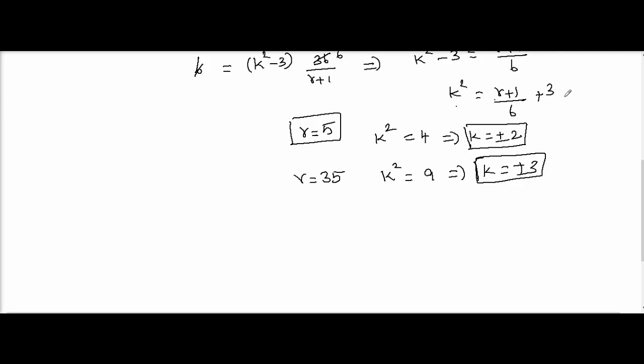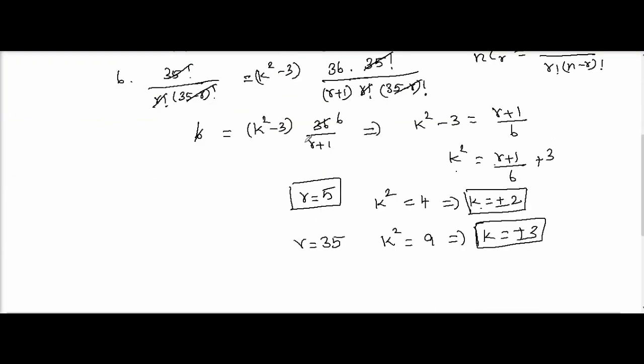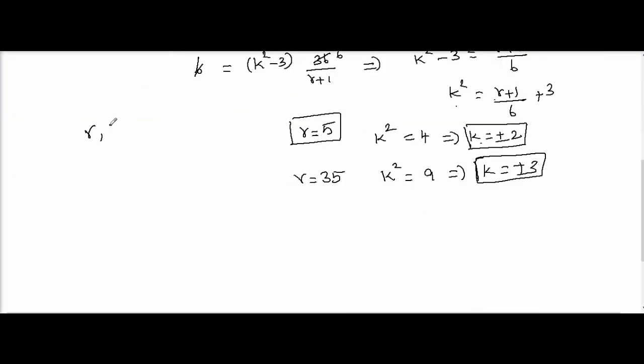For other values of r, k square becomes a non-integer, so we can ignore those. The question asks for ordered pairs (r,k). When r equal to 5, k equal to 2 or minus 2, so 2 ordered pairs. When r equal to 35, we get k to be 3 or minus 3, so 2 more ordered pairs. In total we get 4 ordered pairs.